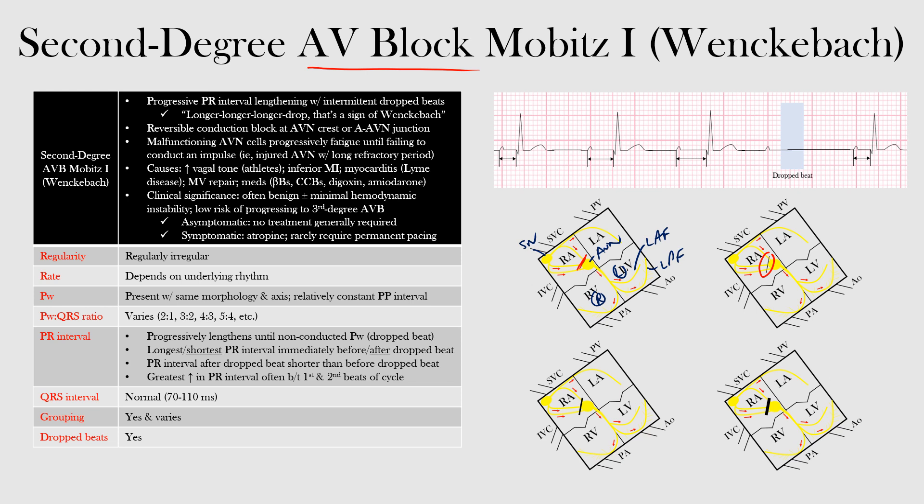Second-degree AV block Mobitz type 1, or Wenckebach, is characterized by progressive lengthening of the PR interval with intermittent dropped beats. You can see a normal PR interval in the first beat, but then every successive beat that follows has a progressively longer PR interval until conduction at the AV node fails, resulting in a dropped beat. A P wave will occur but fail to conduct to the ventricles, and therefore the QRS complex is dropped.